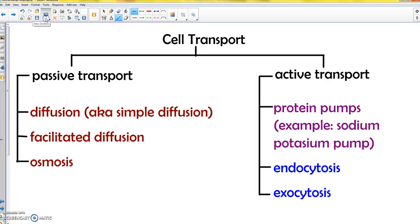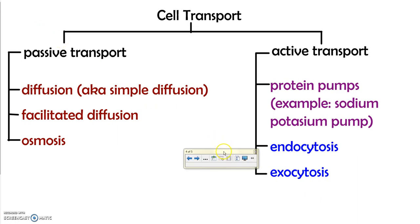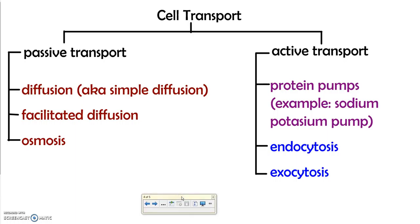This is a quick rundown of all the forms of transport — cell transport, which means moving things in and out of a cell. They have to get through the cell membrane, which we always talk about as the guardian or gatekeeper of the cell. We divide transport into two main categories: active transport, which requires energy, and passive transport, which does not require energy.